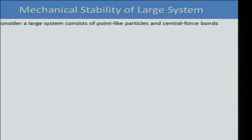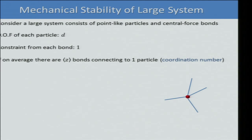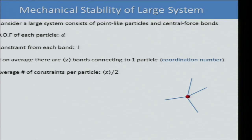In condensed matter physics we're interested in collective behaviors of large systems, so it's useful to derive a local version of this equation. Consider a large system of point-like particles and central force bonds. Each particle contributes D degrees of freedom and each bond contributes one constraint. If the average coordination number is Z, the average constraints per particle is Z/2. The critical condition for mechanical stability is Z equal to 2D.